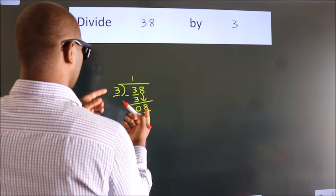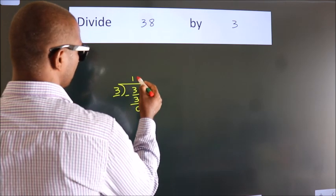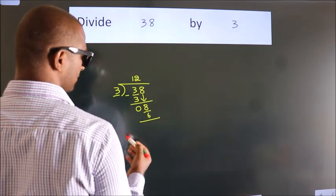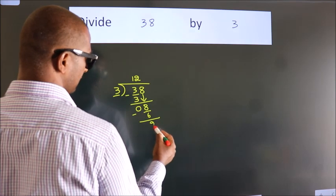A number close to 8 in 3 table is 3 2s, 6. Now we subtract. We get 2.